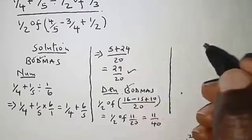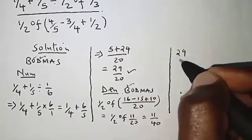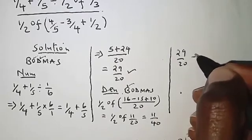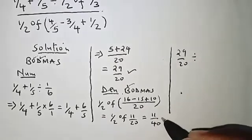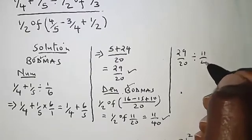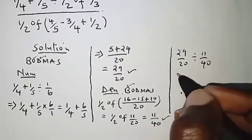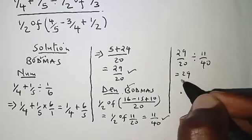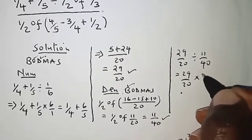Divided by the denominator, 11 over 40. So that should be 29 over 20 times 40 over 11.